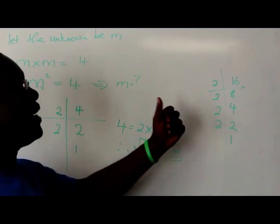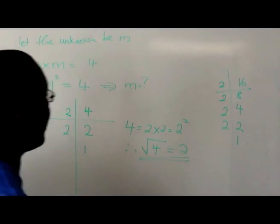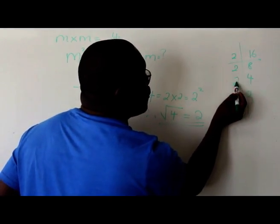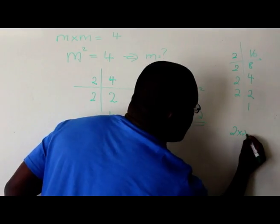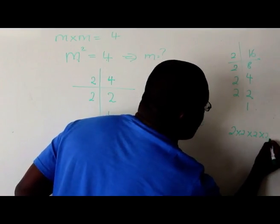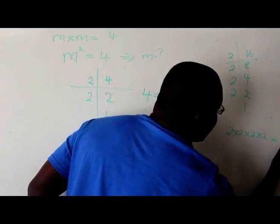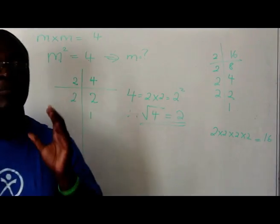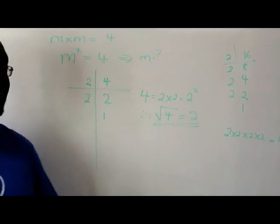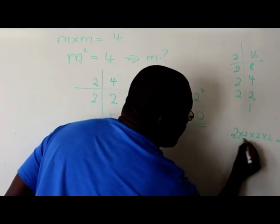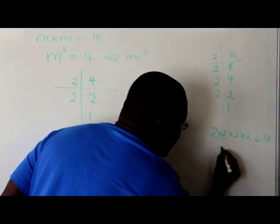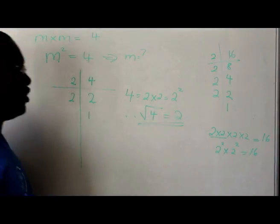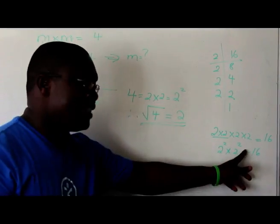What we have now is a situation where we have how many 2's? 1, 2, 3, 4. So it's 2 times 2 times 2 times 2 equal to 16. We've expressed 16 as a product of its prime factors. If you look at it carefully, you'll find that this is 2 times 2, which is 2 squared, times 2 squared, which is 16.